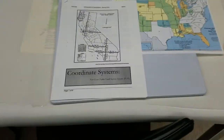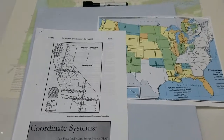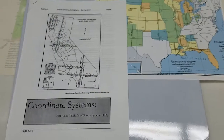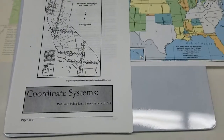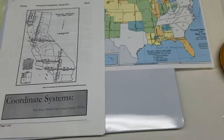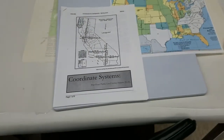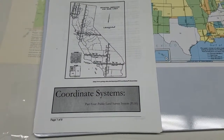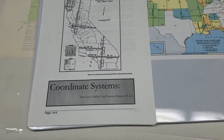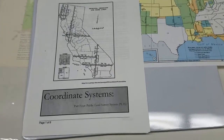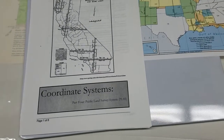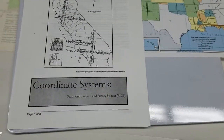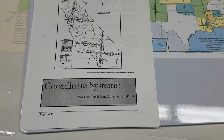Welcome to the next installment in the series of videos on coordinate systems. This video is going to cover Township and Range, otherwise known as the public land survey system. This really isn't a coordinate system in the sense we've been talking about — we don't have true XY coordinates. This is basically a land management and land division system, and it helps us locate areas rather than individual points like UTM, geographic coordinates, and state plane.